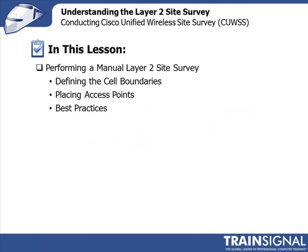In this lesson, we're going to start talking about how you'd go about performing a Layer 2 site survey. First of all, we're going to talk about what it means to define the edge of a cell boundary if you're doing data, voice, or location wireless LAN. Then we'll talk about how to actually determine how to place the access point and the different techniques for doing that. Then we want to talk about best practices recommended when you conduct your Layer 2 site survey.